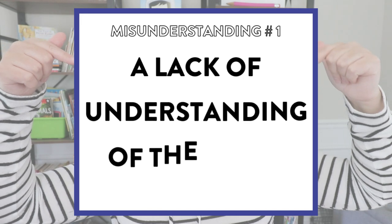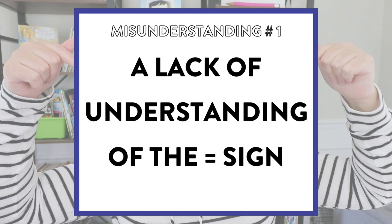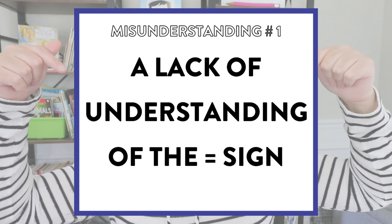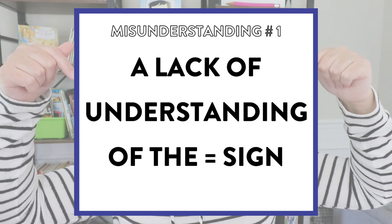Misunderstanding number one is that students largely have a lack of understanding of the equal sign. When students see the equal sign, many simply think they need to write down their answer. But they're missing that both sides of the equal sign need to be the same — they need to be balanced. That equal sign doesn't just mean 'here is your answer,' which is understandable in K–2 classrooms, but we do need to do more work around what the equal sign means: everything on this side needs to equal everything on the other side.